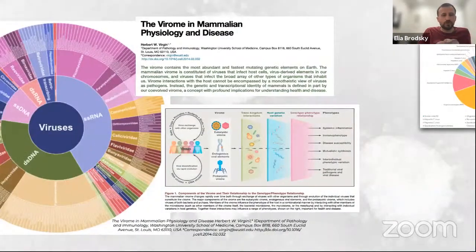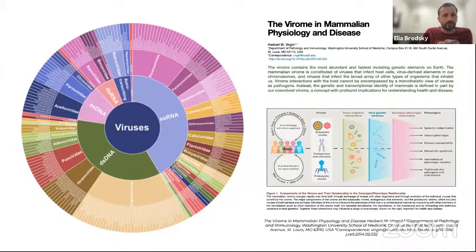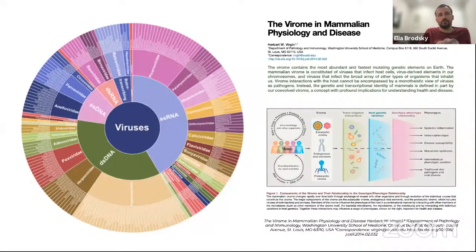The virome is one part of the microbiome and constitutes all of the organisms that inhabit us — all of the microorganisms that live in our gut, lungs, mouth, and everywhere. Those could be divided into bacteria, fungi, but also viruses. When we talk about all of the viruses present in our body, a lot of these viruses are actually harmless to human beings.